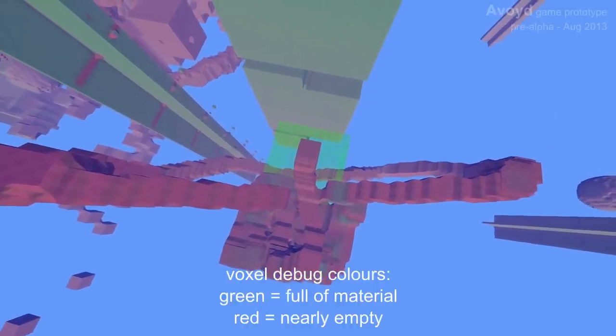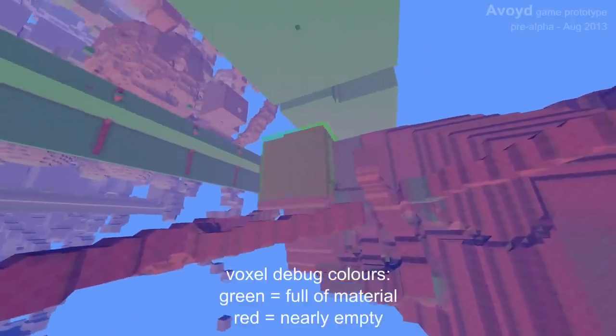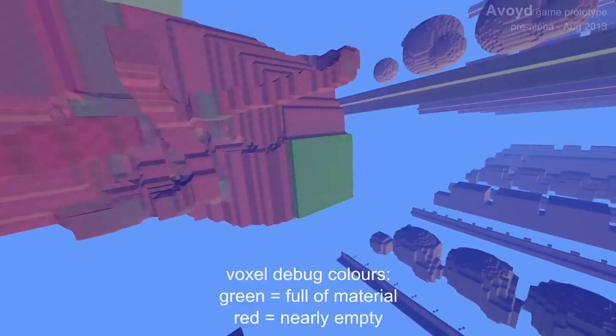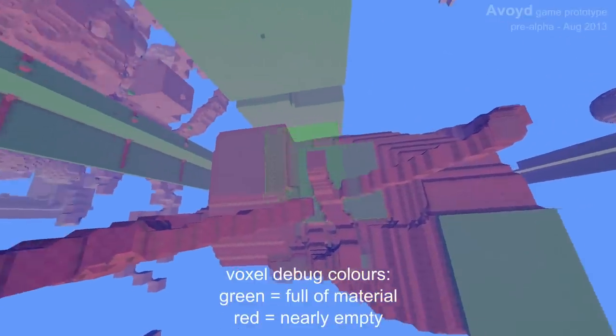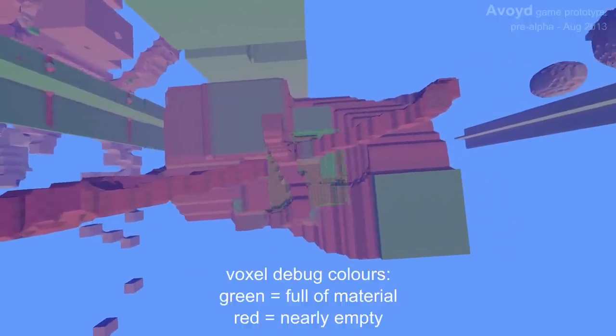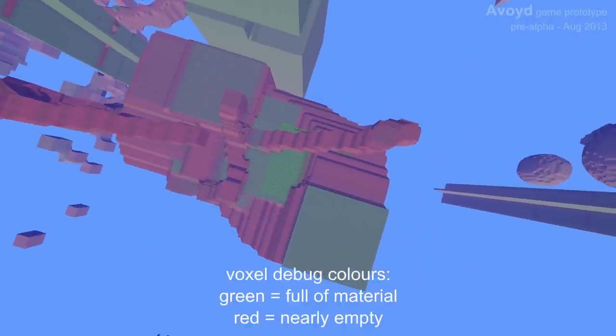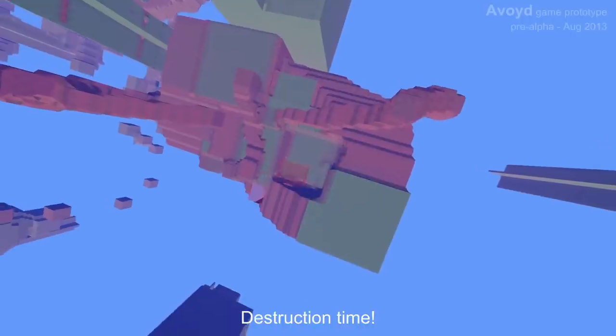Increasing the size to a much larger set of cubes, we can still edit really quickly. Again, here the green part is when I've completely filled in each little one-by-one voxel.